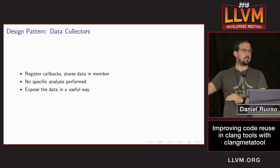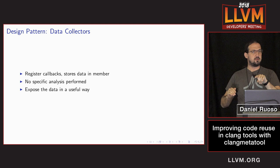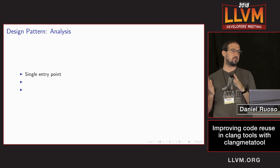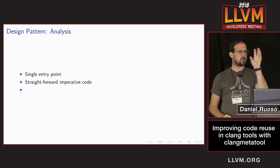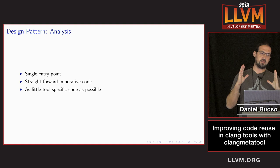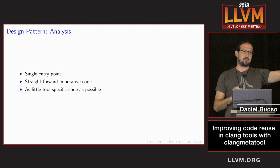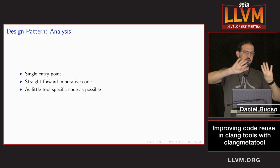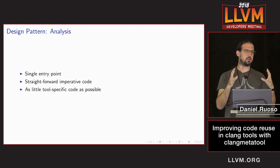The analysis phase is defined by having a single entry point — no callbacks. It's straightforward imperative code where you call a function with some data and it returns some data. The goal is that your tool should have as little tool-specific code as possible. All the infrastructure — what data you need, what analysis logic to perform — should be moved into reusable components. The code making the specific logic for the syntax you want to change will be very short in any particular tool; that is the code you'll throw away in the end.